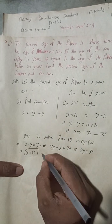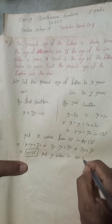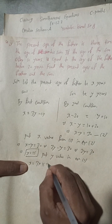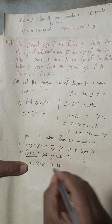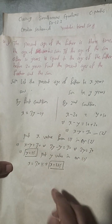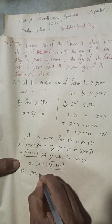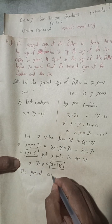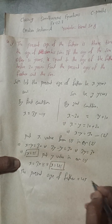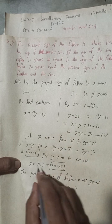Now put the value of y into equation 1. So x = 3 × y, which is 3 × 15 = 45 years. So x = 45 years and y = 15 years is the answer. Therefore, the present age of the father is 45 years and the present age of the son is 15 years.